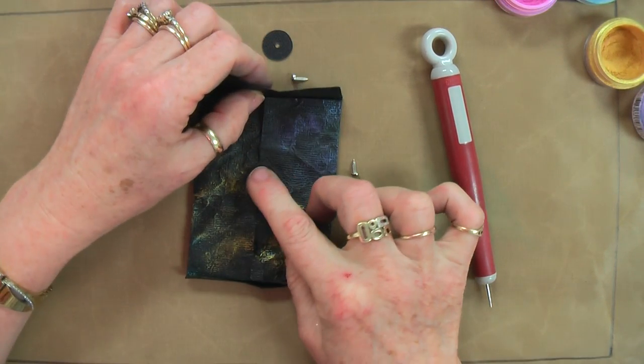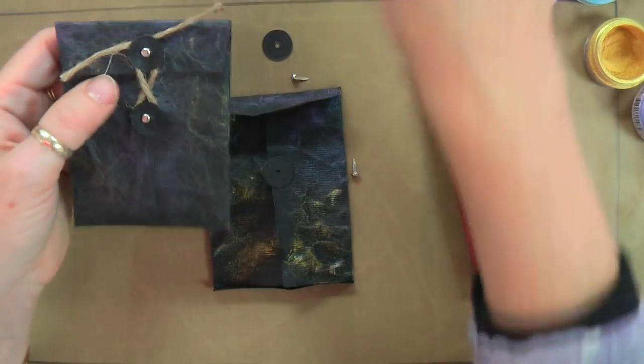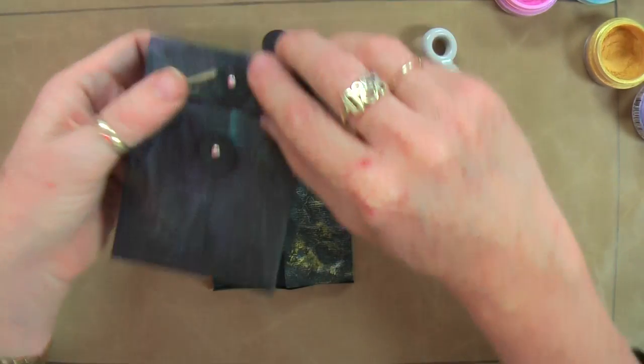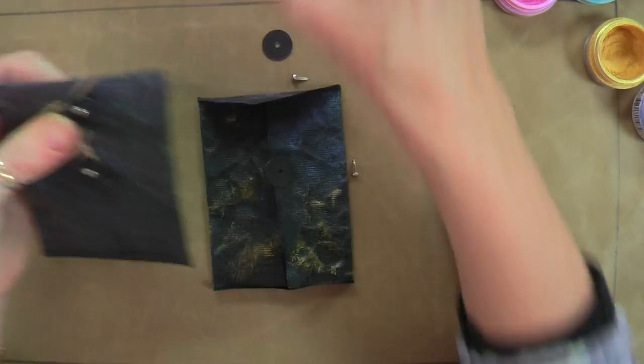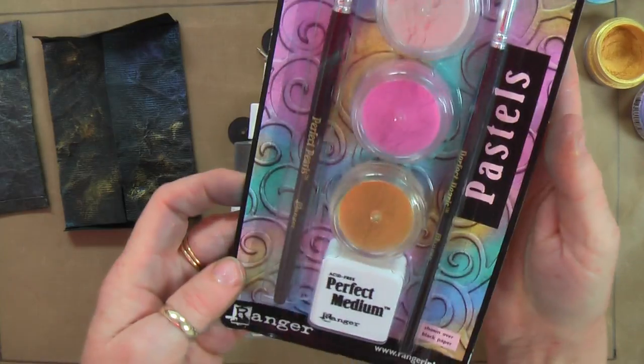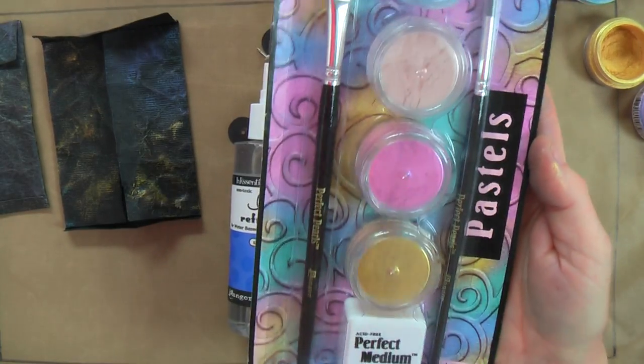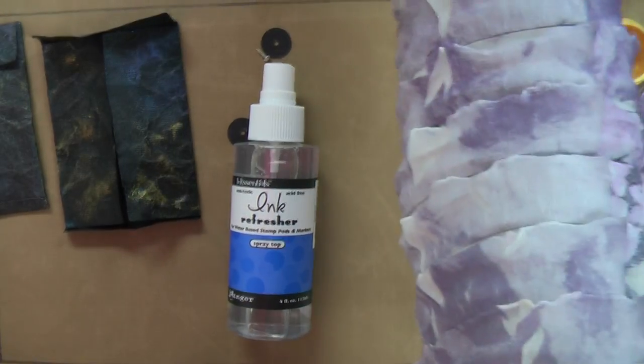So one goes in the flap on the envelope, the other goes on the body of the envelope. And then you just take your string and wind it in a figure of eight to close your envelope. So there it is there. So the products that I've used are the Ink Refresher, the Perfect Pearls, and I've used the Sizzix Alterations Pocket Envelope Die to create my little envelope.